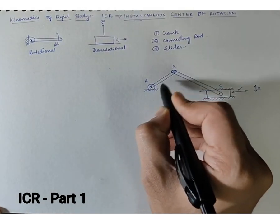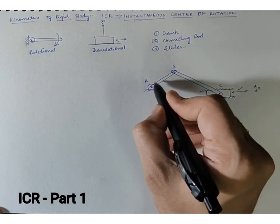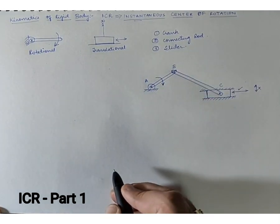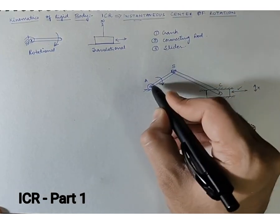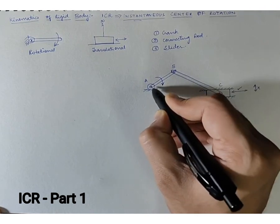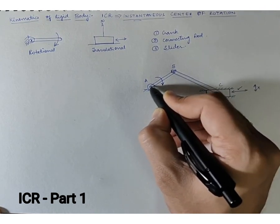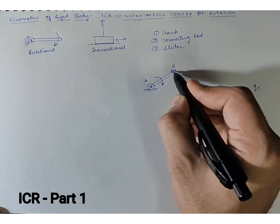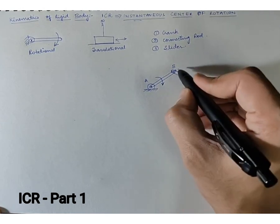Now how is this possible? Just imagine that for this particular diagram we have drawn, my crank is going to rotate in this given direction. As soon as the crank starts rotating, point A will remain here because this is the point from where the entire crank is rotating.